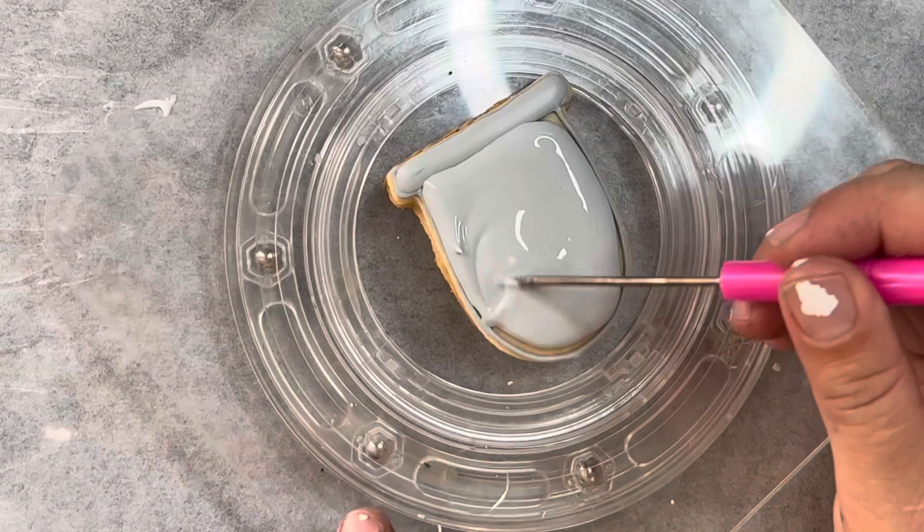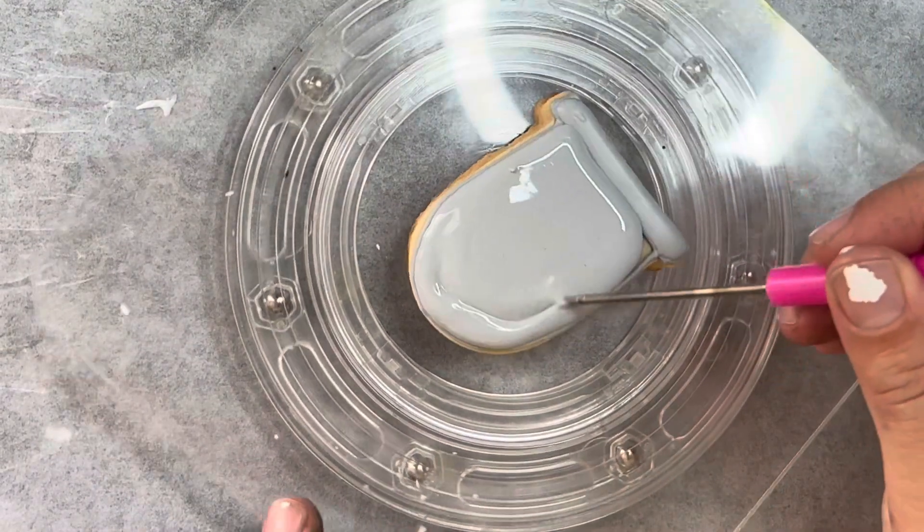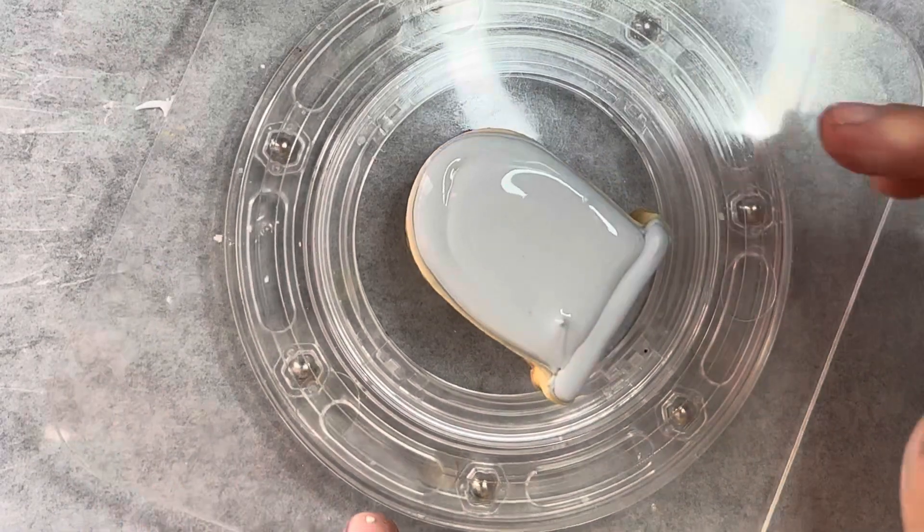After I flood it, I'm going to just fill in the outlines, make sure it's in all the corners and creases of the cookie. And then I'm going to put that in the dehydrator and let it dry.